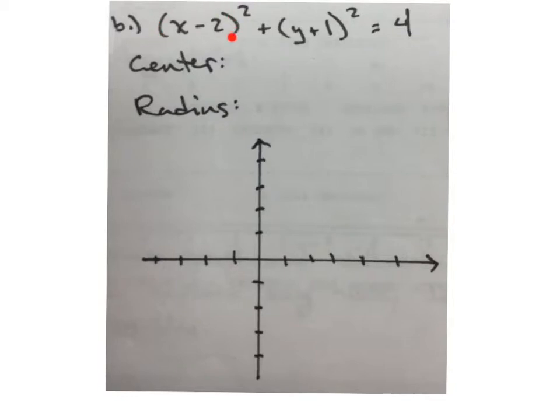Now the center is the point that we can see by looking at the x and the y. Since this one says x minus 2, that means the x coordinate is positive 2. And since it says y plus 1, that means the y coordinate is negative 1. That's what the center is.